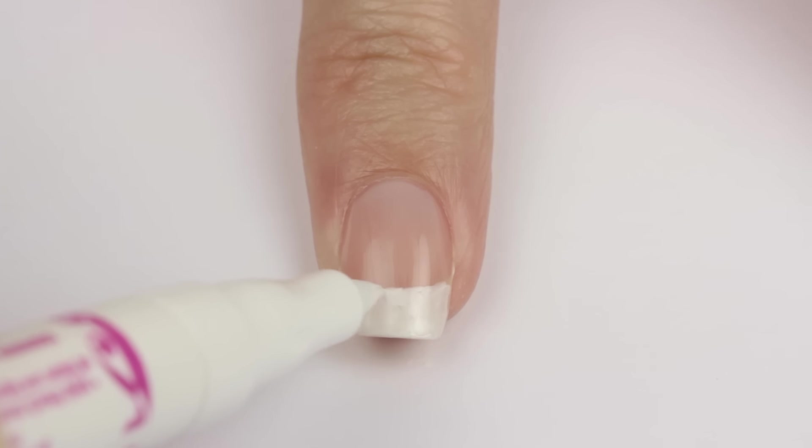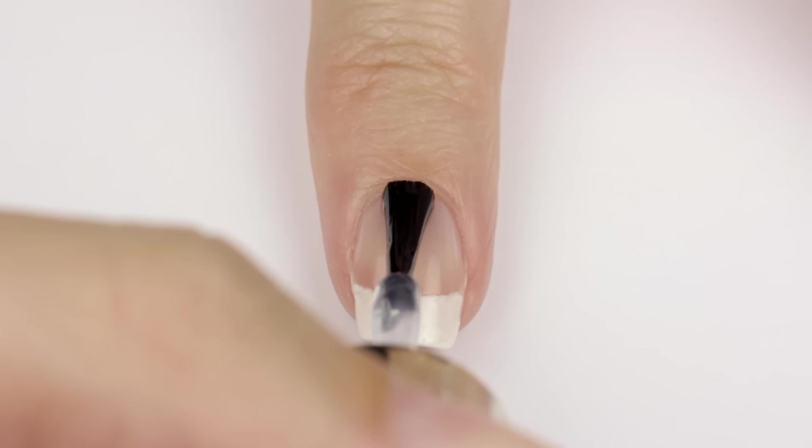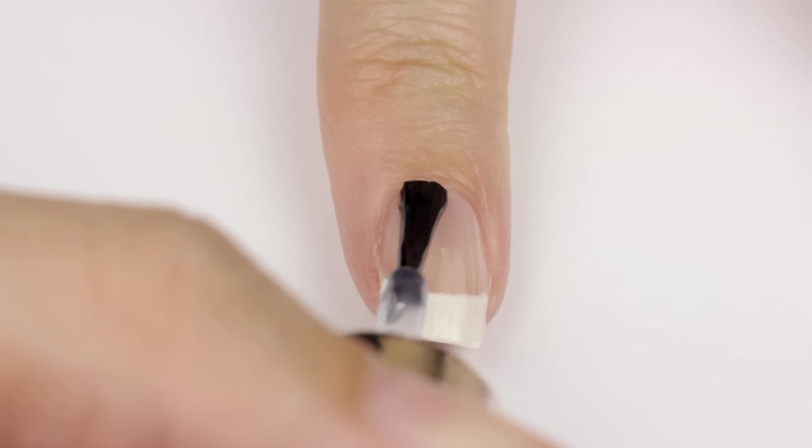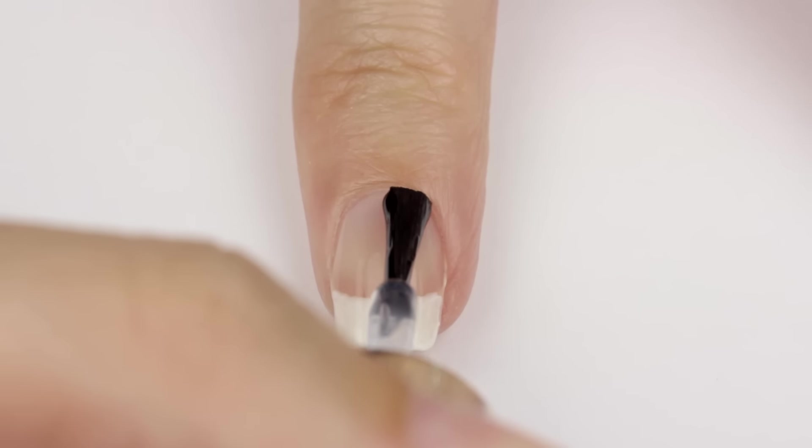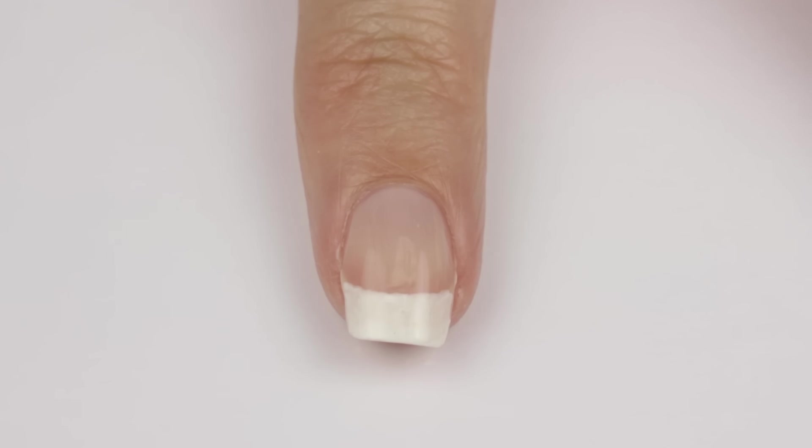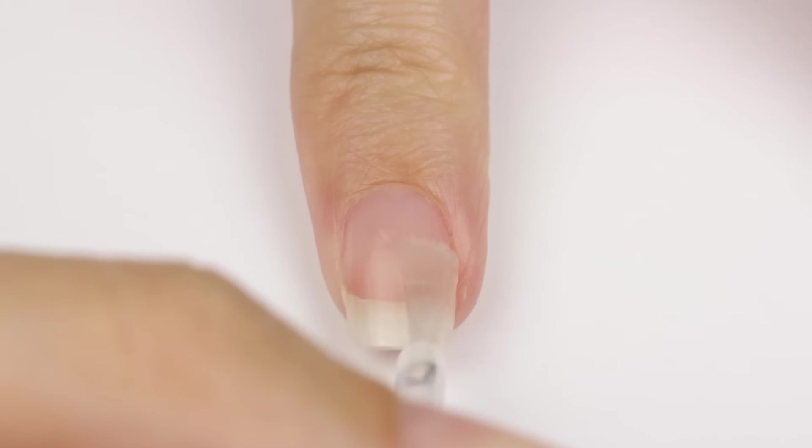Once you're done coloring in your white tips seal it all in with a top coat. This is important because without a top coat the white pen will come off the next time you wash your hands. On to number four, again start off with a base coat and then use a sheer polish.